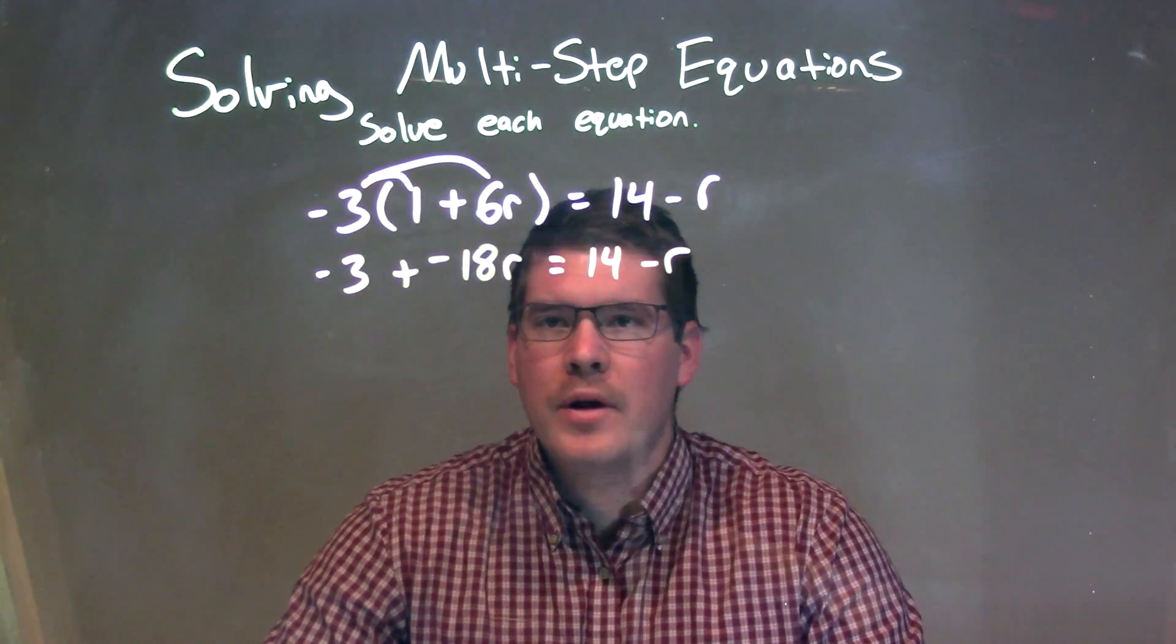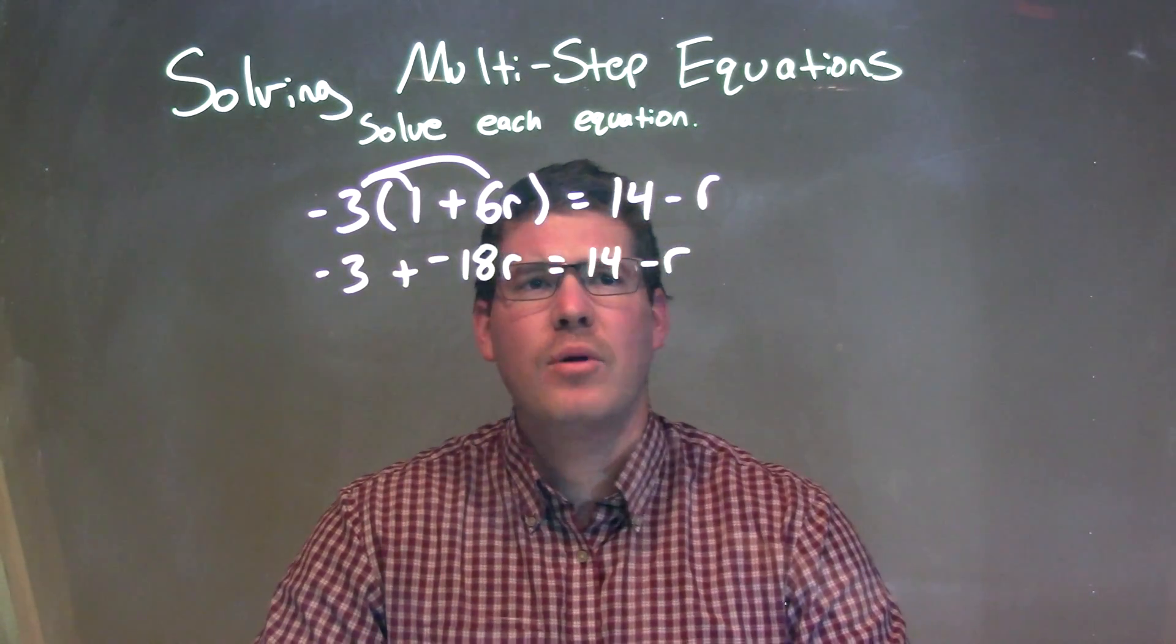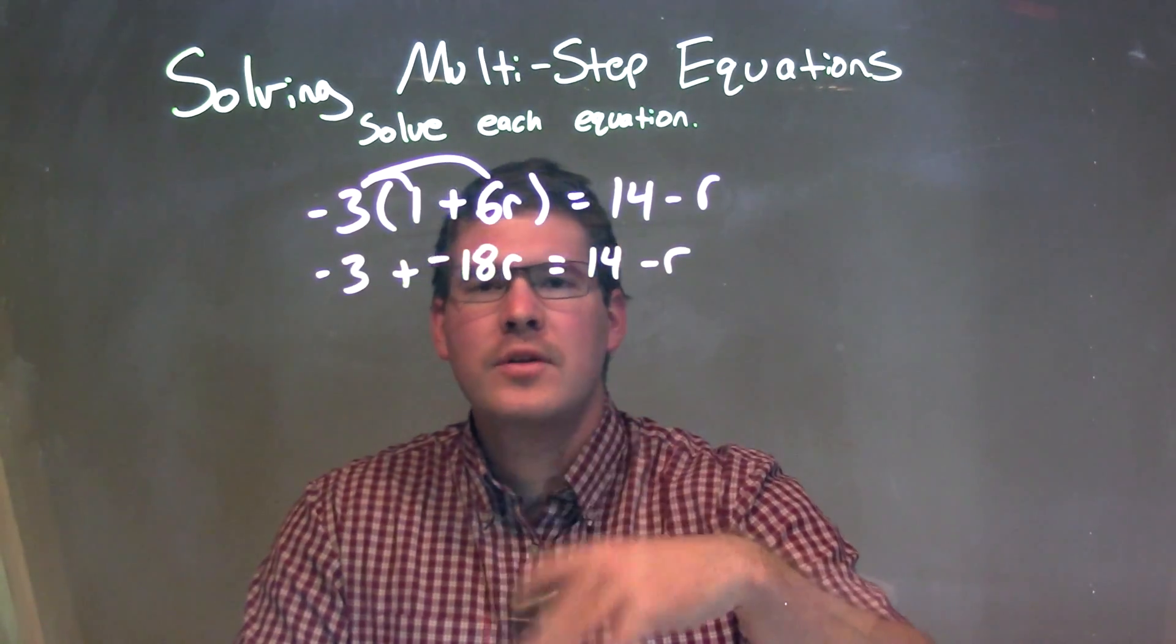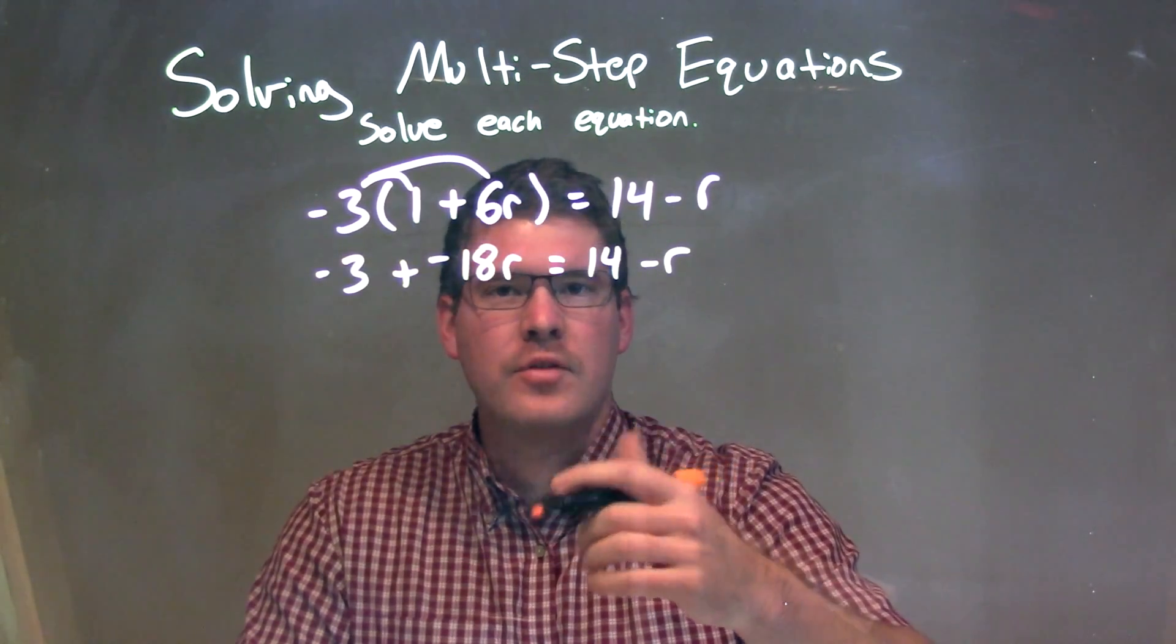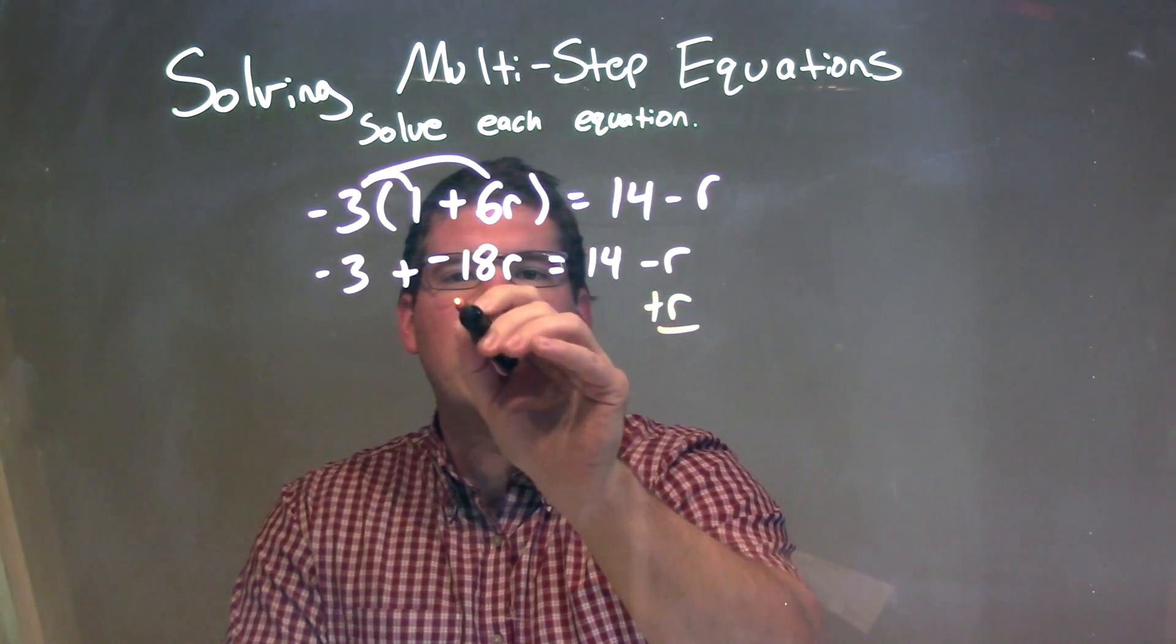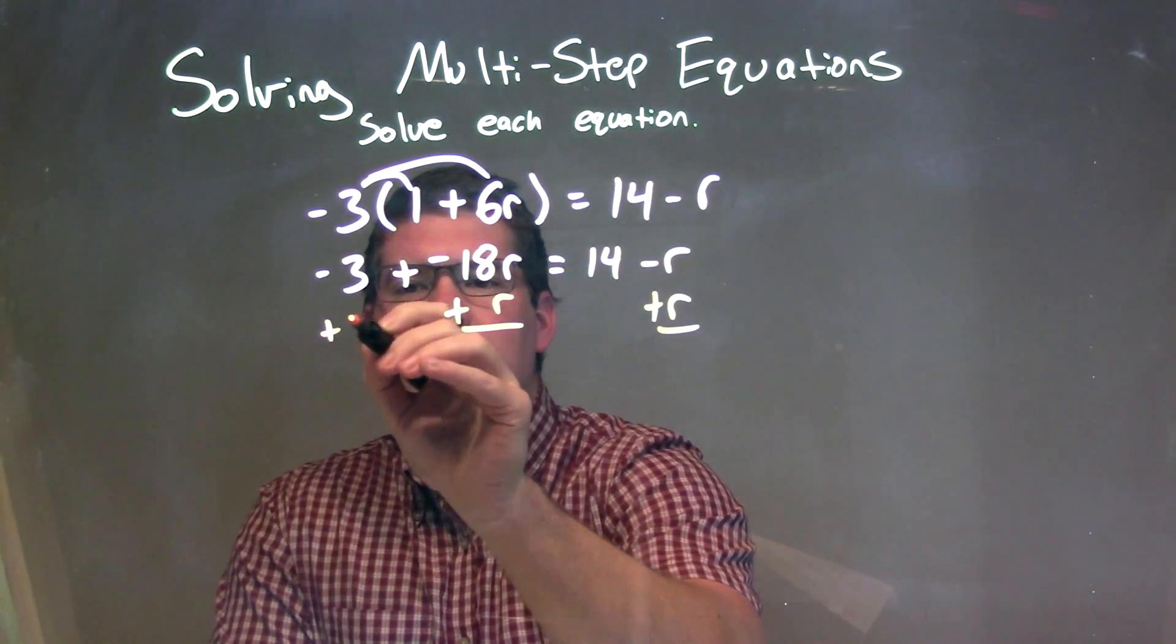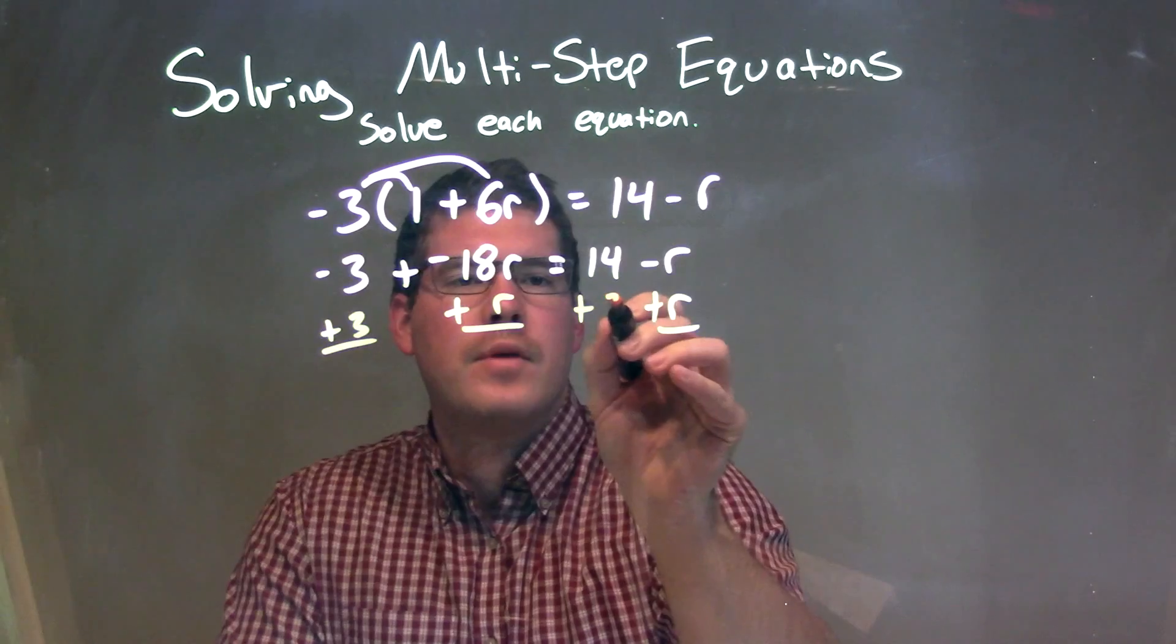So now what we want to do is bring all of our like terms together. So we're going to bring all of our r's to one side and all of our numbers to the other side. So let's add an r to both sides right here. Let's bring our r's to the left, and then I'm going to bring my number to the right. So I'm going to add a 3 to the right.